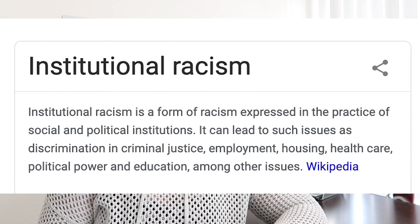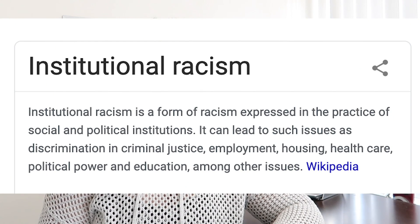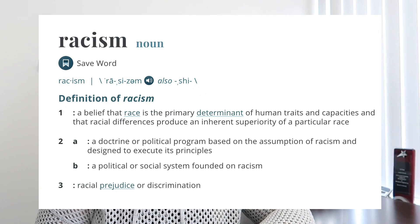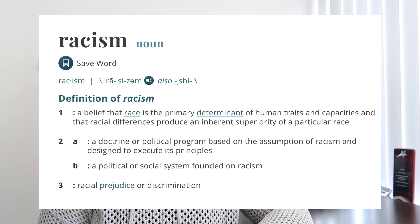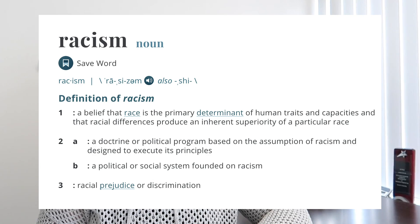I'm saying systemic racism instead of racism for a reason. Systemic racism, also called institutional racism or structural racism, is defined as discrimination expressed through social and political institutions — systems like the criminal justice system, the healthcare system, the employment system, and more. This is different from just racism, which is typically defined as the belief that race determines certain human traits and capacities that result in an inherent superiority of one race over another. Racism usually refers to individual belief, whereas systemic racism refers to the impact of institutions designed and shaped by those beliefs.